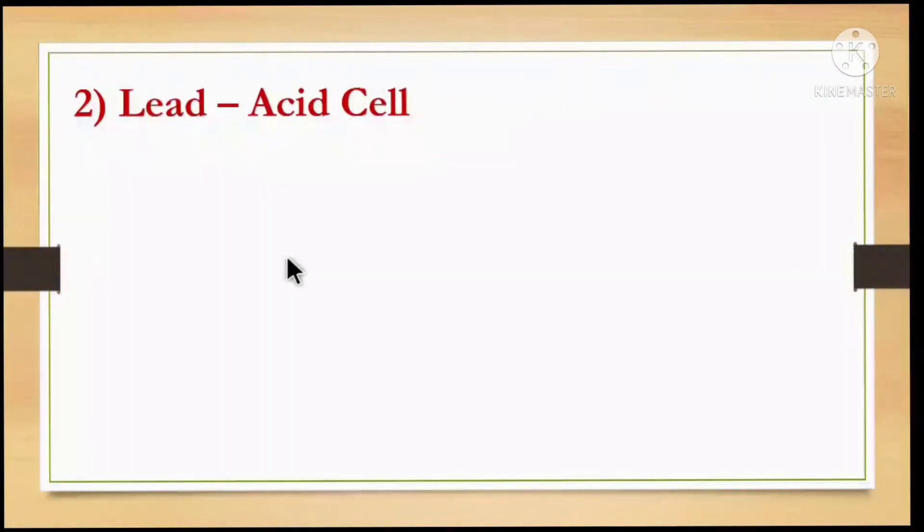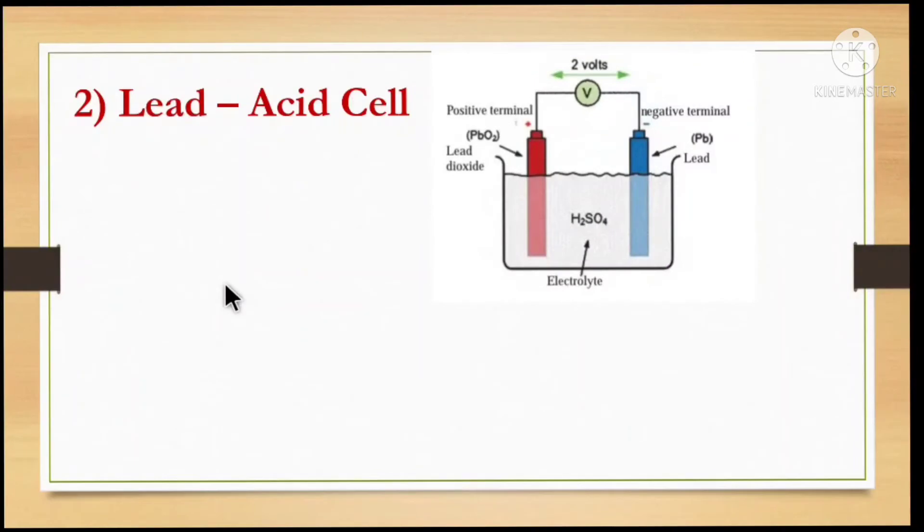Another type is the lead-acid cell. It has two rods: lead dioxide and lead. Lead dioxide carries the positive terminal and lead carries the negative terminal. Dilute sulfuric acid, H2SO4, acts as the electrolyte.